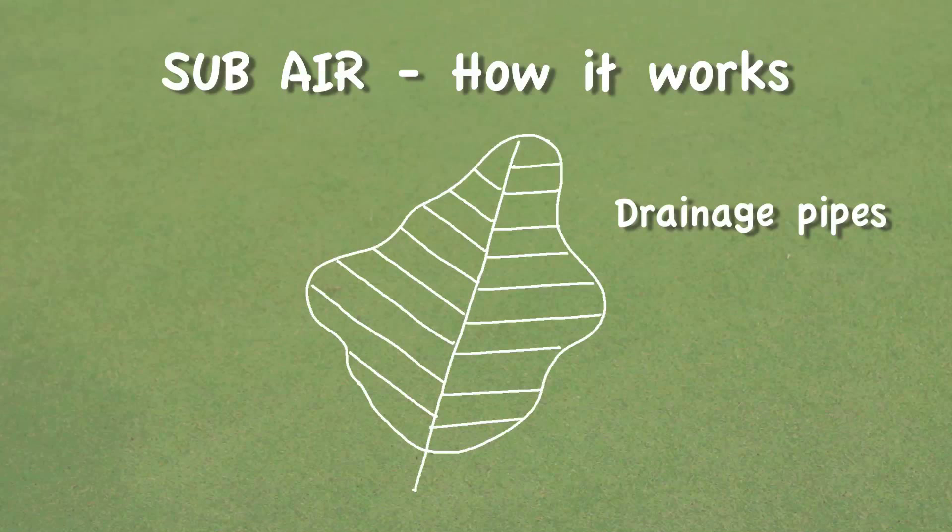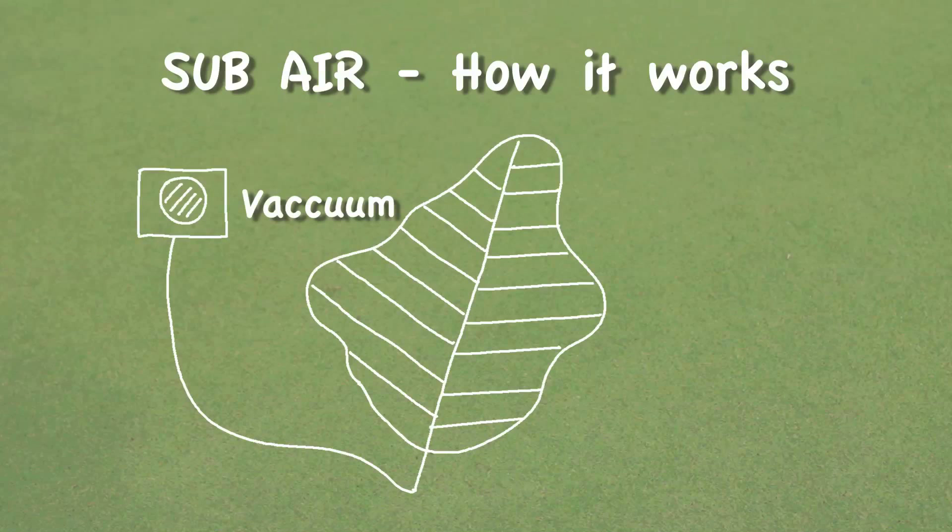The Subair system is then connected to a vault off the edge of the green with a huge vacuum inside that vault. When the Subair system is turned on, it creates a vacuum system inside this green through this herringbone drainage system and pulls the water out of the green in this direction.